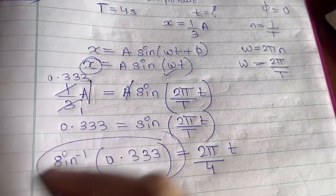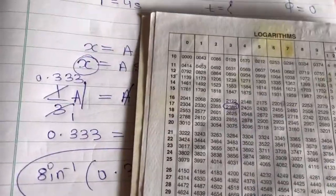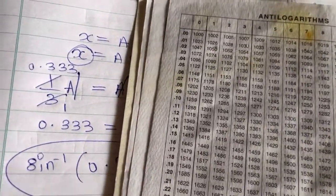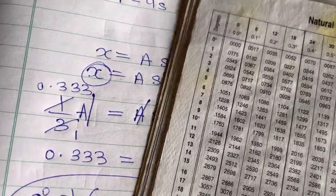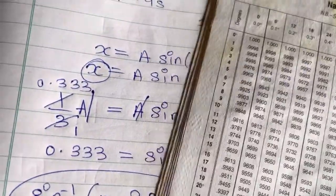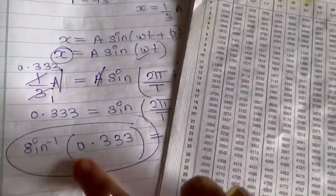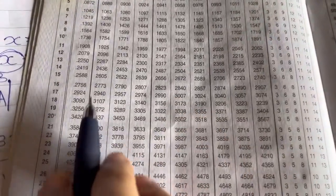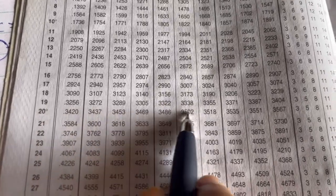Now we will check in the log book for the value of this digit. We will go in natural sign. Now it is 0.333 and then 3.